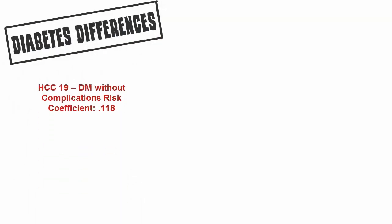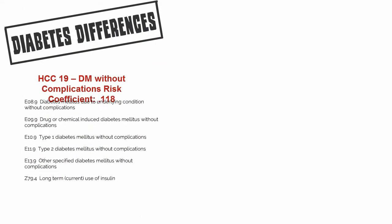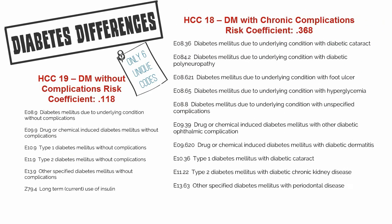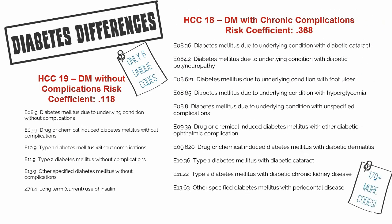Let's look at diabetes for a minute. There are two diabetic HCCs: HCC 18, that's with a chronic complication, and HCC 19, which is without a chronic complication. HCC 19 has a risk score of 0.118, but HCC 18 has a risk score of 0.368 — more than triple the HCC 19 risk score. There are six unique codes for HCC 19, but there are over 170 codes for HCC 18, each uniquely identifying a chronic condition.